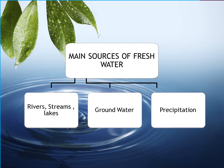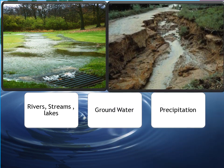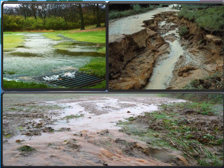Surface runoff means the water which flows on top of the surface rather than going underground. Because sometimes when rainfall is heavy, water flows on the surface as surface runoff. That water mixes with pesticides, fertilizers, debris, soil, gravel, and many other things, so it cannot be considered a source of fresh water.